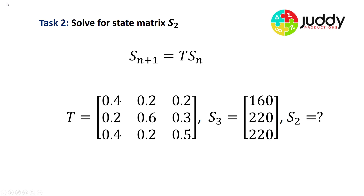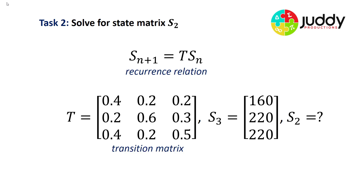Task number two: we have the same transition matrix and the same third state, but this time we want to find the second state matrix. Instead of moving forward in our recurrence relation, we're moving backwards to S2. We have our recurrence relation, our transition matrix, our third state matrix, and we wish to calculate the second state matrix.